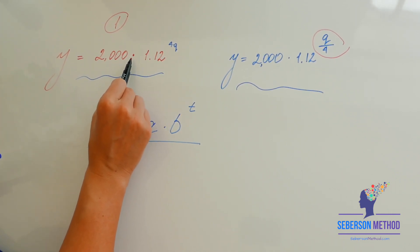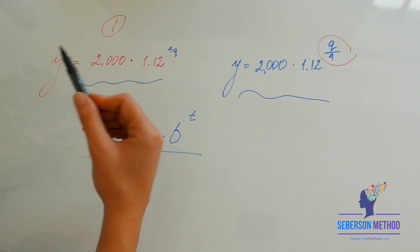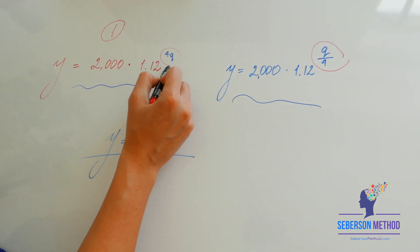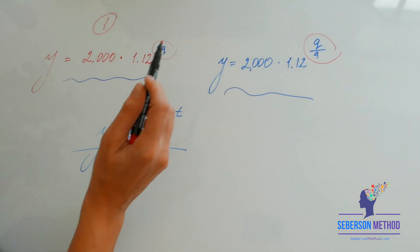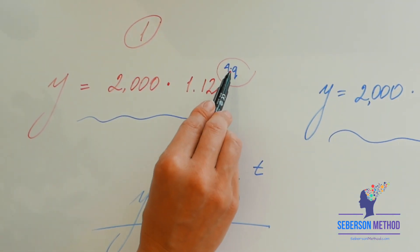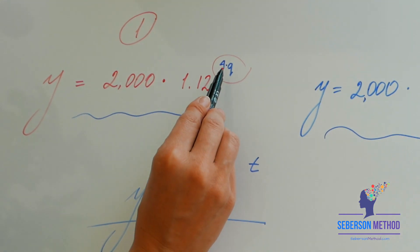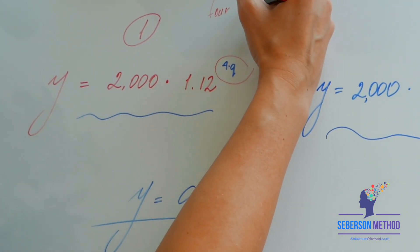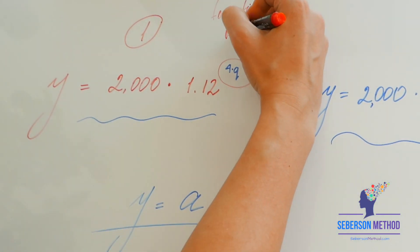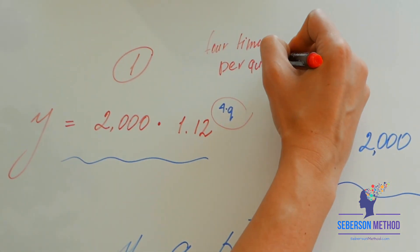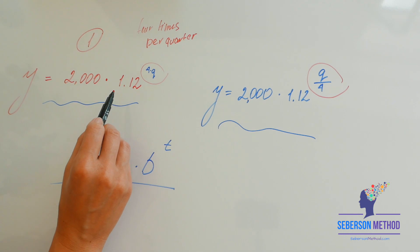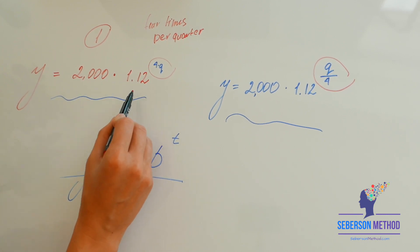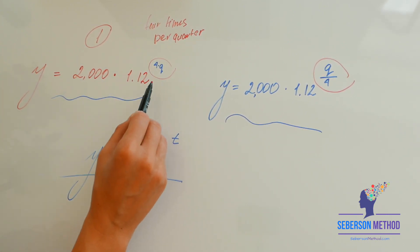Here, we have 2,000, and we are multiplying it by 1.12. We are growing it by 12% because we have 1.12, and the power we are raising it to is 4q. Do you see how it says 4 times q? I did it on purpose because I want you to remember that the way I want you to perceive this is 4 times per quarter. That means this growth happens 4 times a quarter. That means this growth happens a lot. It happens every month. Your $2,000 grows very, very quickly.